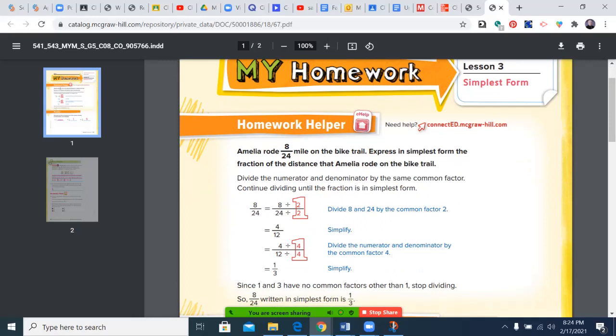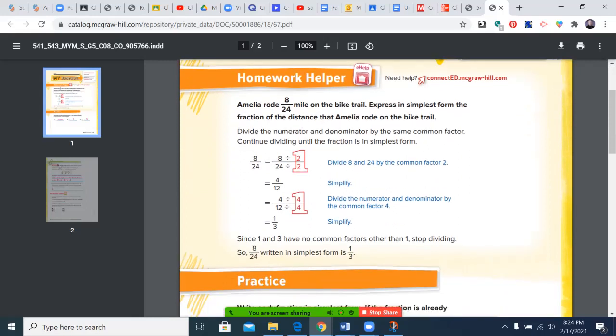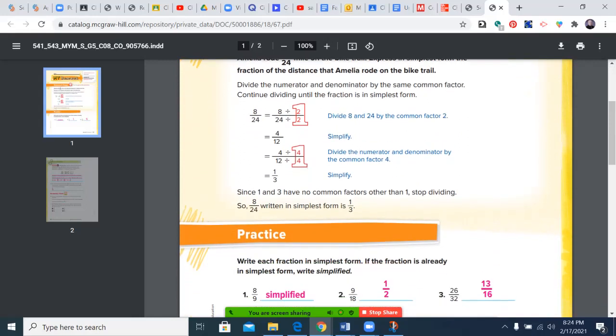We'll begin today's session with a review of the homework from our previous session. Remember, we were using the greatest common factor to simplify fractions into their lowest terms. We must divide the numerator and the denominator by the exact same digits.